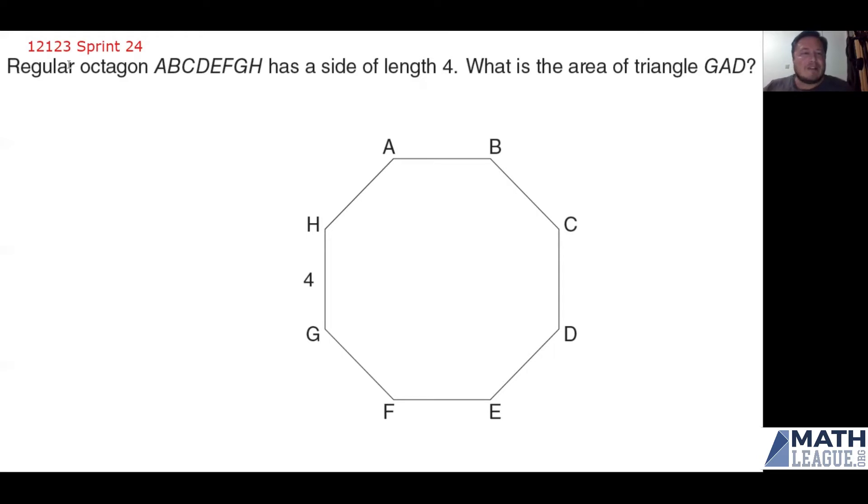So here we have a regular octagon ABCDEFGH, which we have in the diagram here. It has a side length of four. One of the things that I often recommend in geometry problems is as soon as you acquire information, put it in the diagram. Put everything you have in the diagram. So side length of four, I'm just going to put fours all the way around this thing so that we have a record of that.